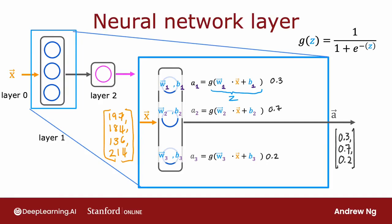Today there are neural networks that can have dozens or even hundreds of layers. To introduce notation to help us distinguish between different layers, I'm going to use a superscript in square brackets to index into different layers. In particular, a superscript in square brackets one is used as notation to denote the output of layer one — the hidden layer of this neural network.